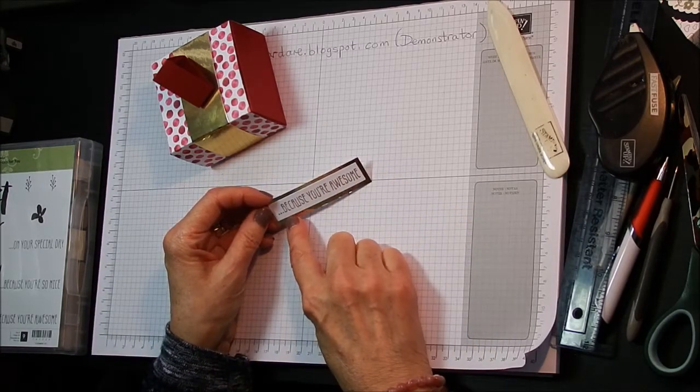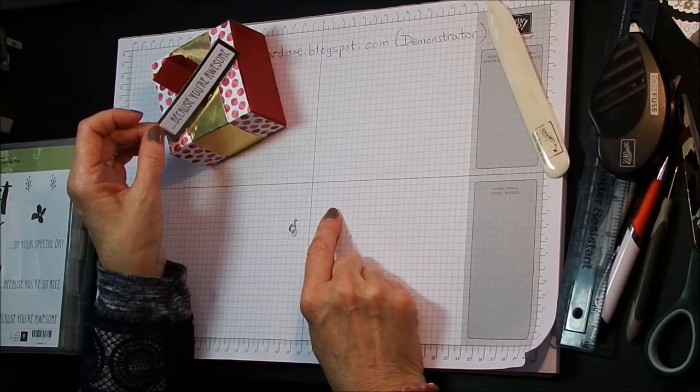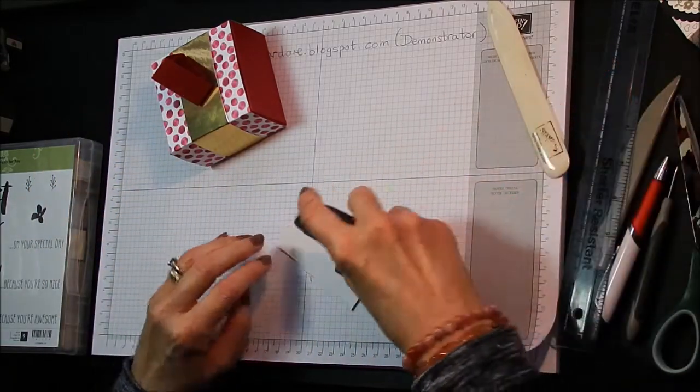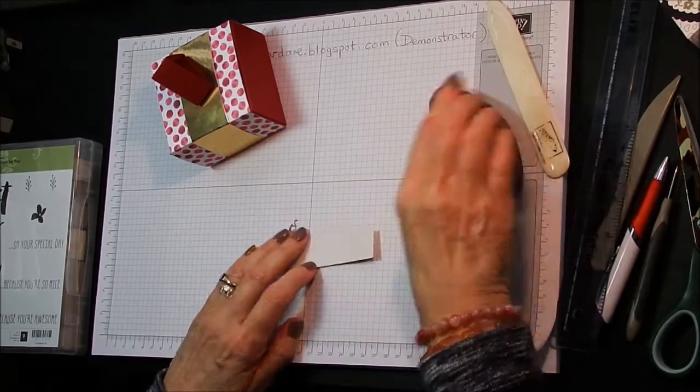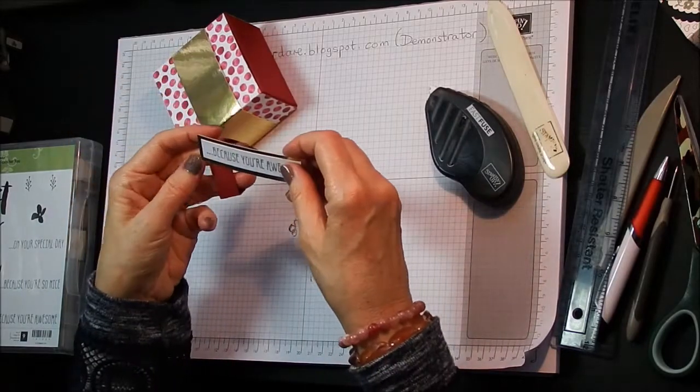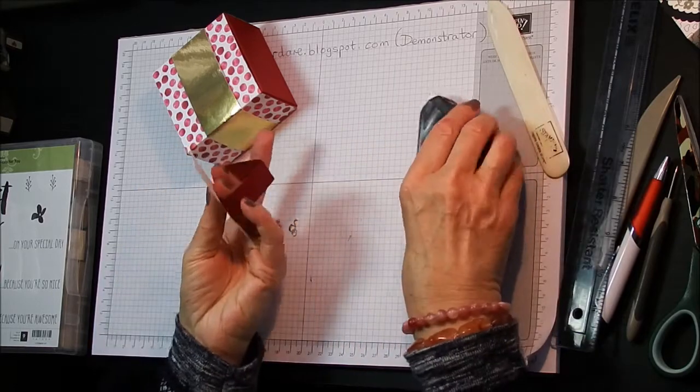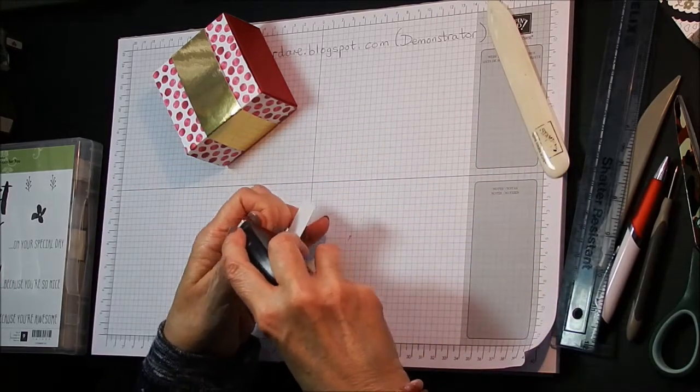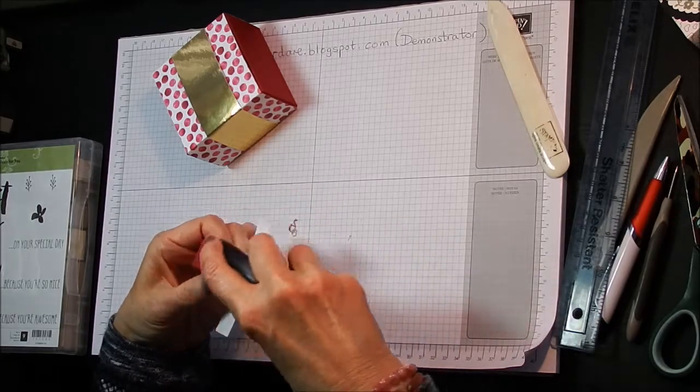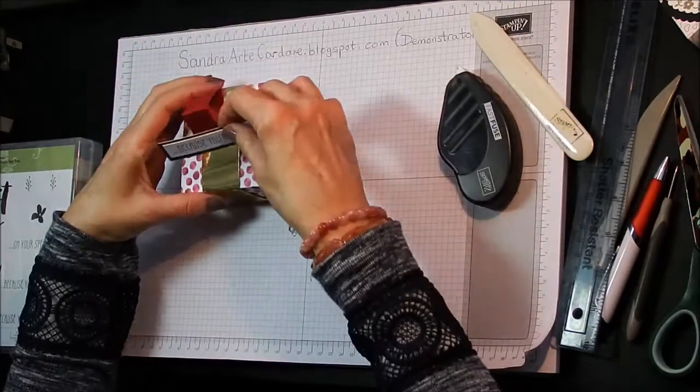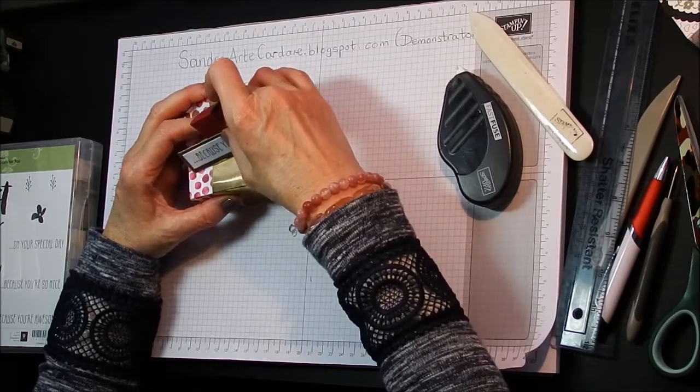So I've stamped because you're awesome from that stamp set. And I'm going to glue that onto there. So a bit of glue onto the middle. And we're going to sit that on there. I just realised I haven't put some glue on my stand. So bear with me while I just do that. So we prep that onto there like that. That's our stand made.